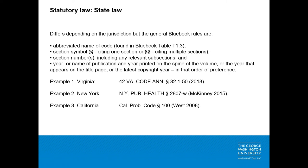State law differs depending on the jurisdiction, but the general citation rules are the abbreviated name of the code, section symbol, section number, and year of the publication in which the enacted code was reported. States have different ways of citing their own laws, so to determine how you should format your citation, you should look up the jurisdiction in the Blue Book table T1 and review how they organize their citations.